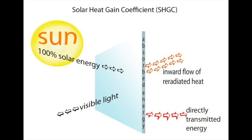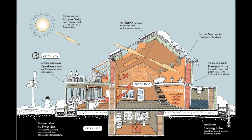Passive solar technologies include direct and indirect solar gain for space heating, solar water heating systems based on the thermosiphon, use of thermal mass and phase change materials for slowing indoor air temperature swings, solar cookers, the solar chimney for enhancing natural ventilation, and earth sheltering.